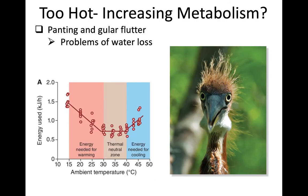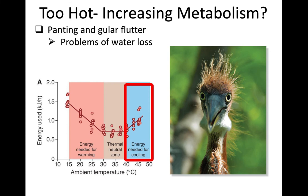Panting is another form of evaporative cooling called gular fluttering — making the basal part of the throat flutter back and forth rapidly, drawing air across a moist surface to release heat. The downside is significant water loss and increased metabolism from that increased muscular activity, so the bird is simultaneously generating some heat while trying to shed it. Seeing a bird with its mouth open breathing and gular fluttering is a sign of severe heat stress. Birds normally breathe through their nostrils, not their mouths.